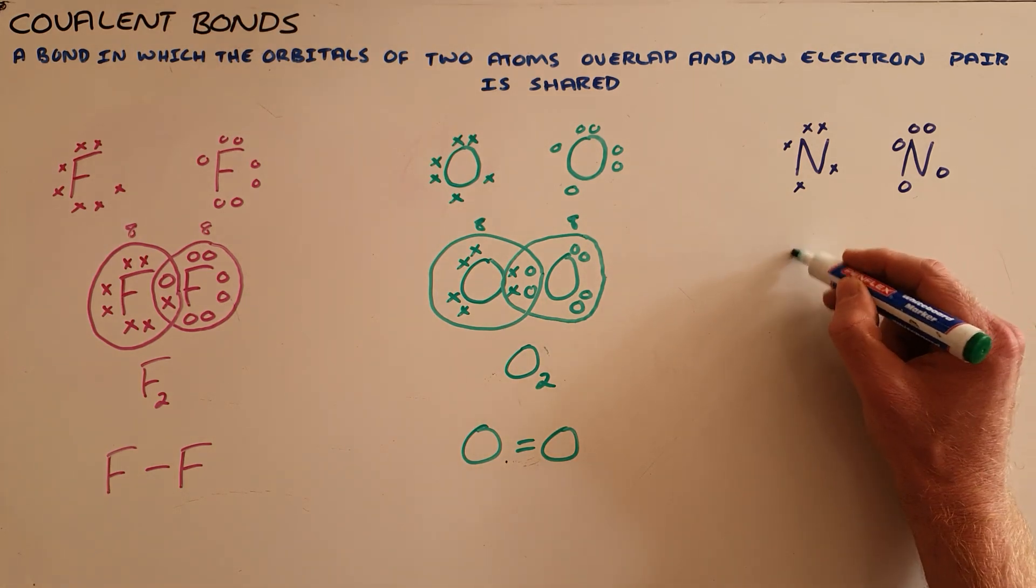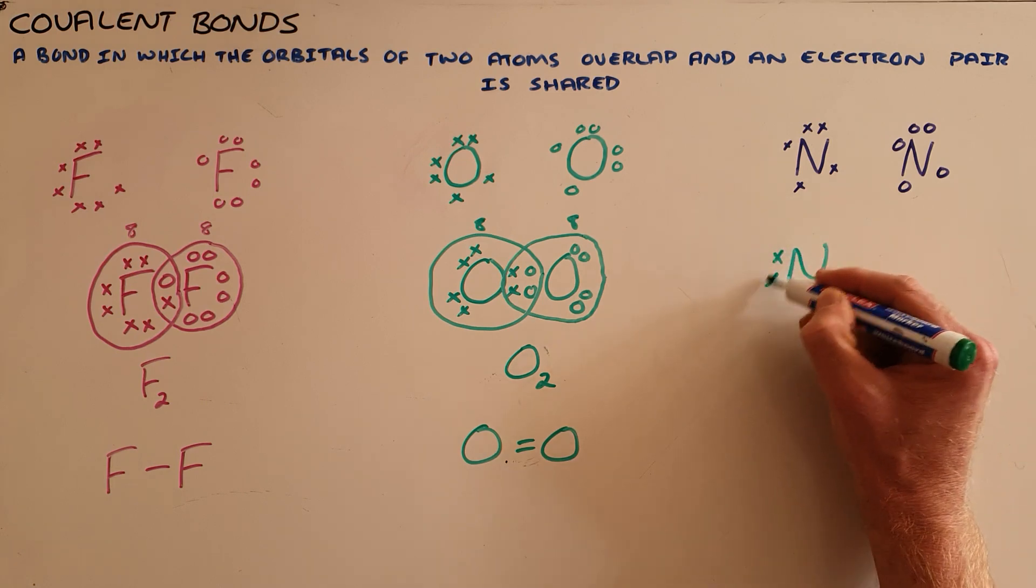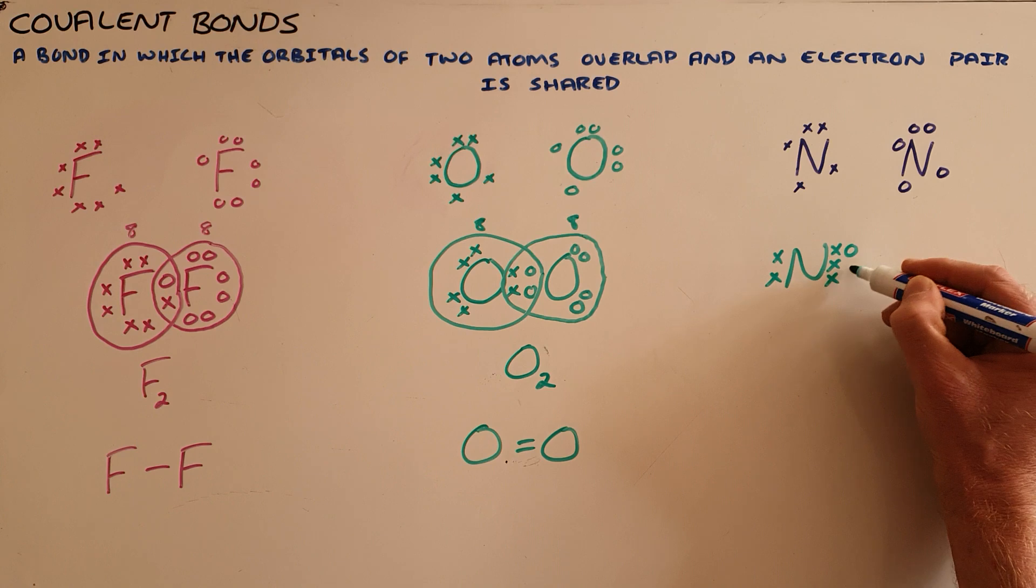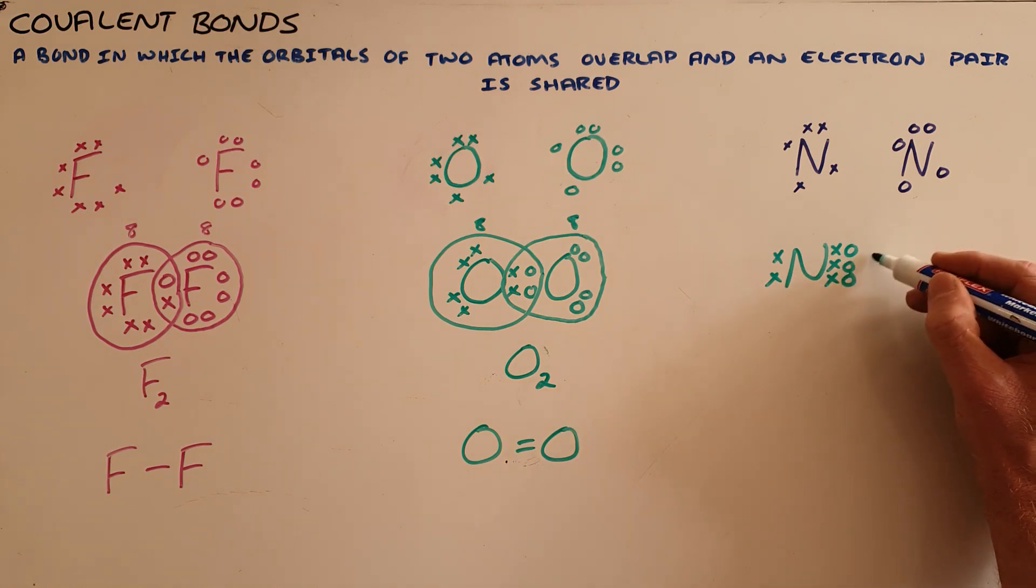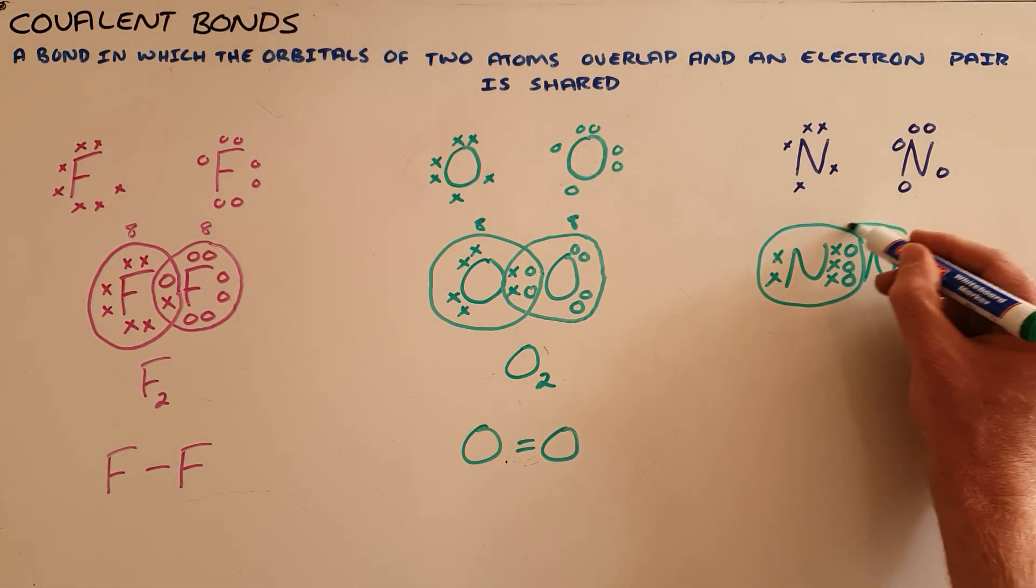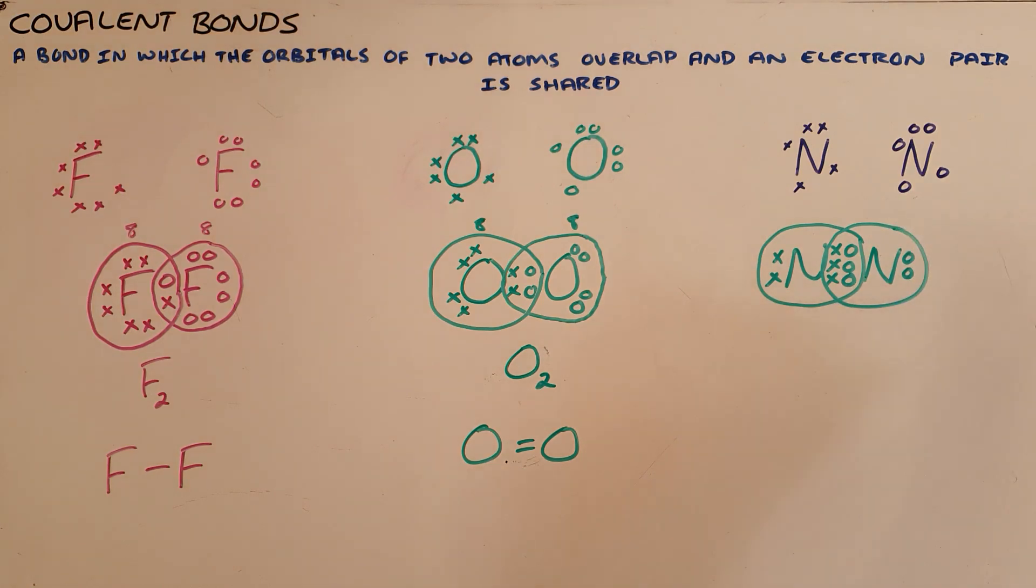Nitrogen is a good example of how a triple bond would be formed, where now each atom in the bond gives three electrons and as a result there are three shared electron pairs. And we say that once again the octet rule is satisfied since each atom has now obtained a full valence shell of eight electrons.